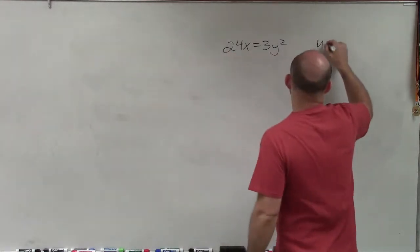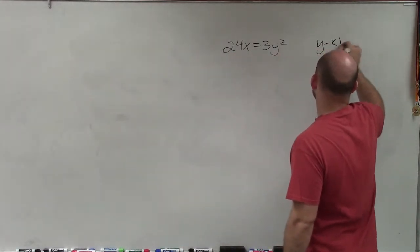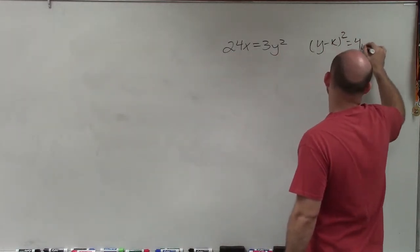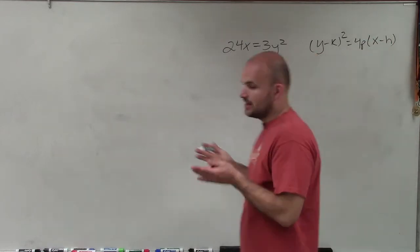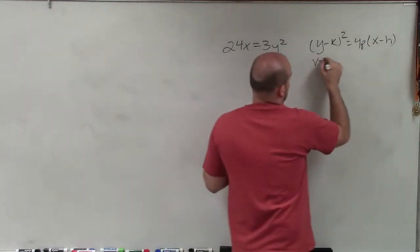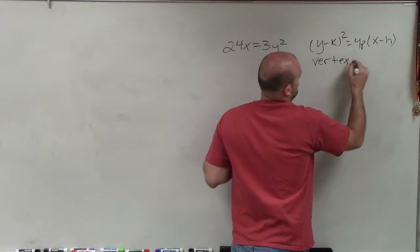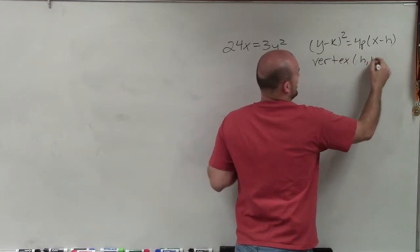Therefore, I can use the equation (y - k)² = 4p(x - h), where the vertex is represented by (h, k).